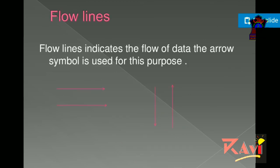Next is flow lines. These are the arrow lines used to connect the different shapes and show the flow of logic in a flowchart.